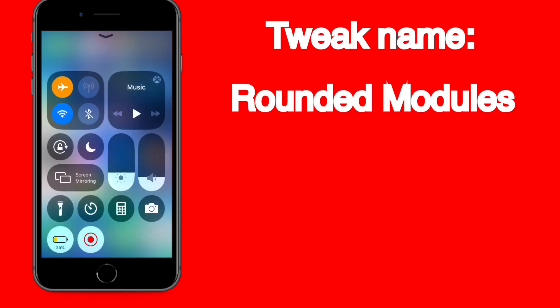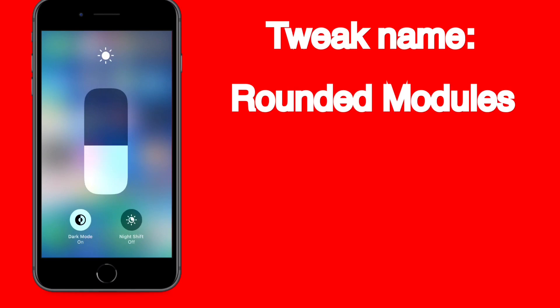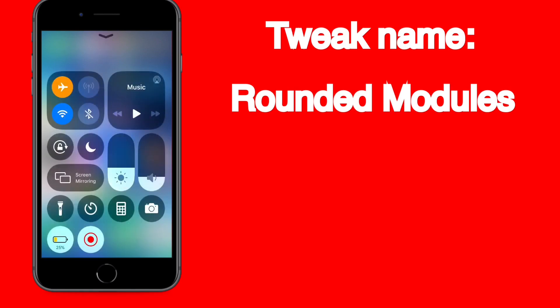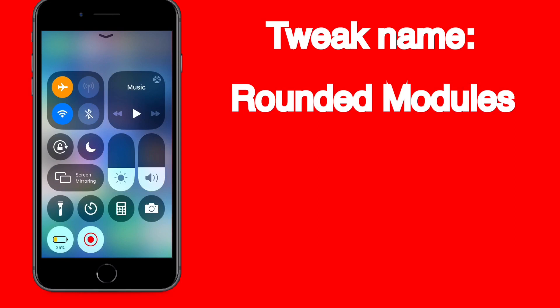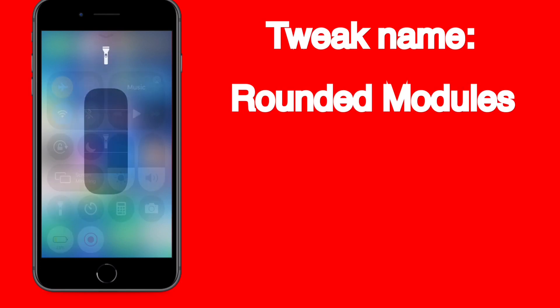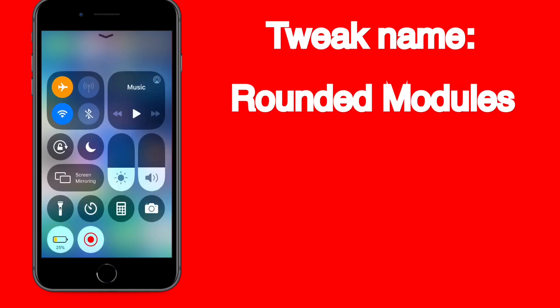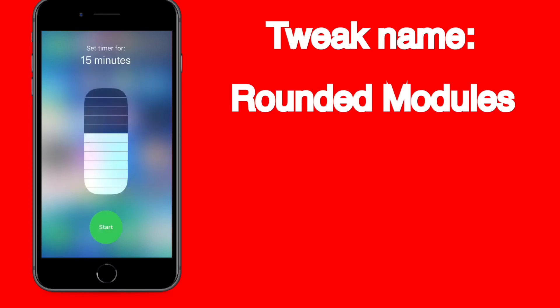Rounded Modules is for your Control Center — it makes it look rounded, which gives it a different look to what you normally have. They all still function properly and it looks better in my opinion. Drop down what you think about this in the comment section — be good to know your opinion.